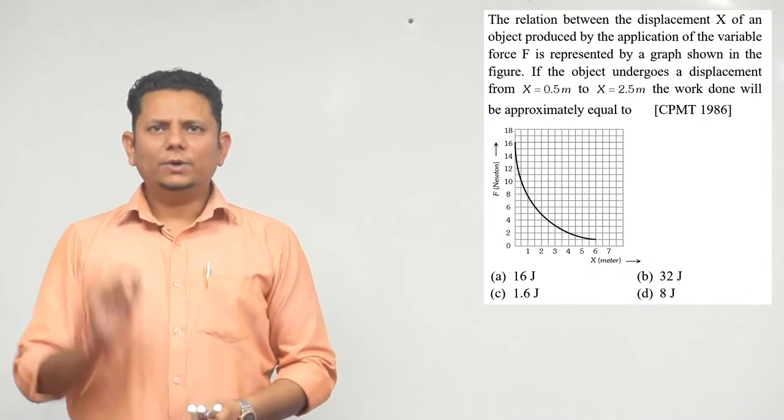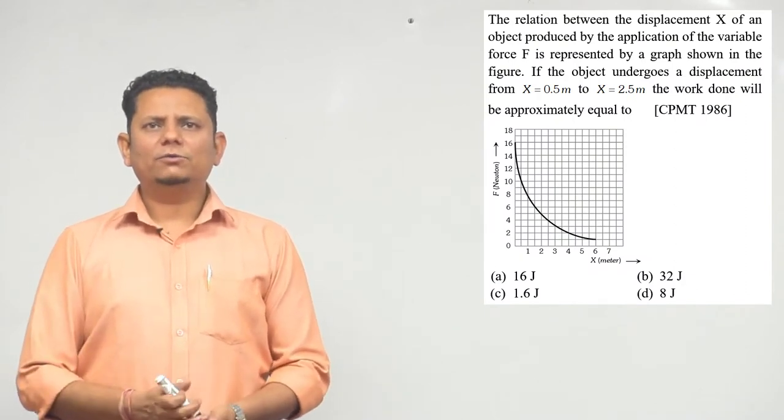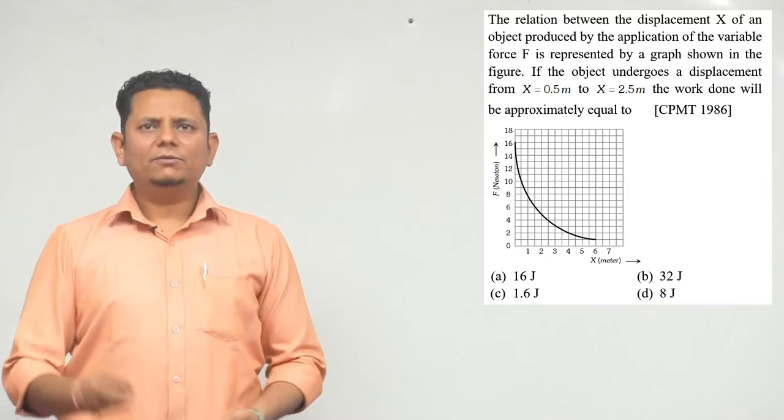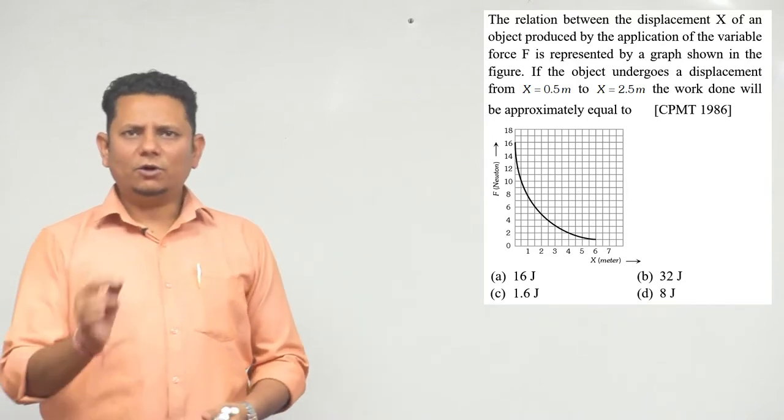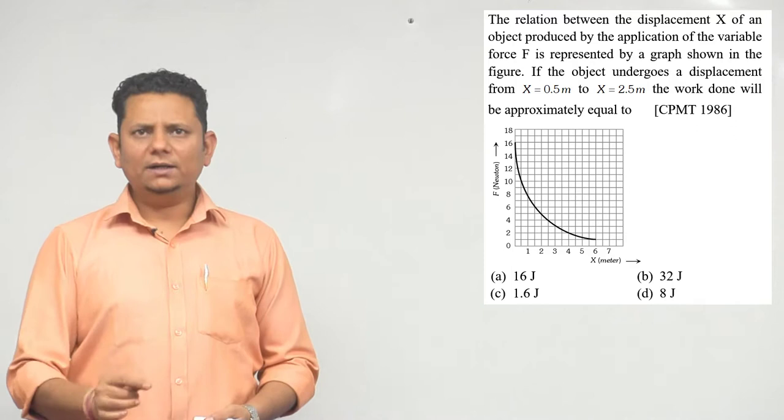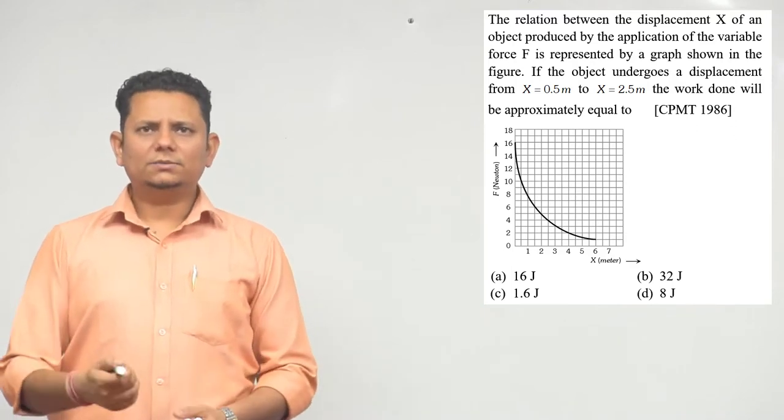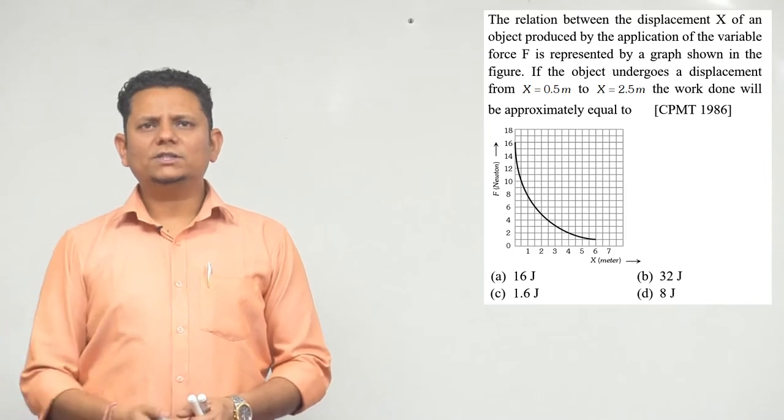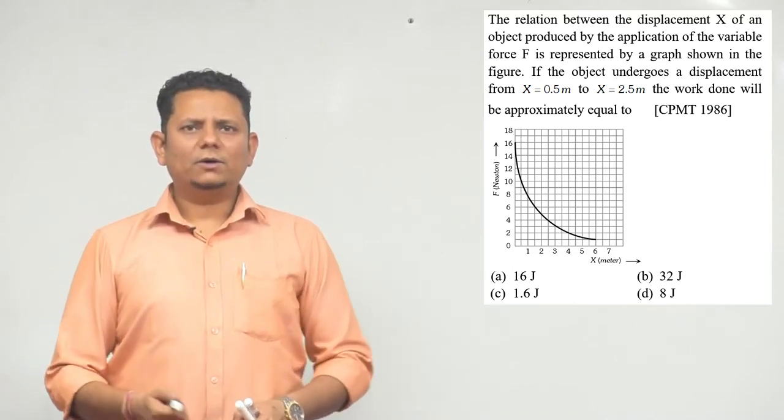Next question says the relation between the displacement X of an object produced by the application of a variable force F is represented by a graph shown in the figure. If the object undergoes a displacement from X equal to 0.5 meter to X equal to 2.5 meter, work done will approximately be equal to...